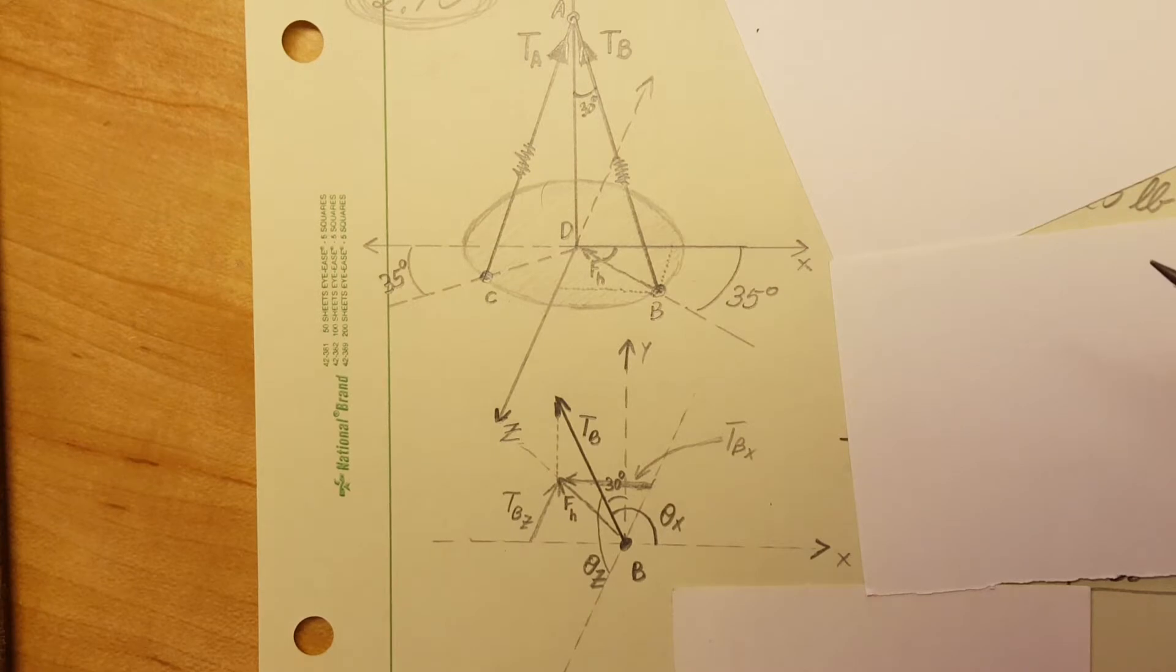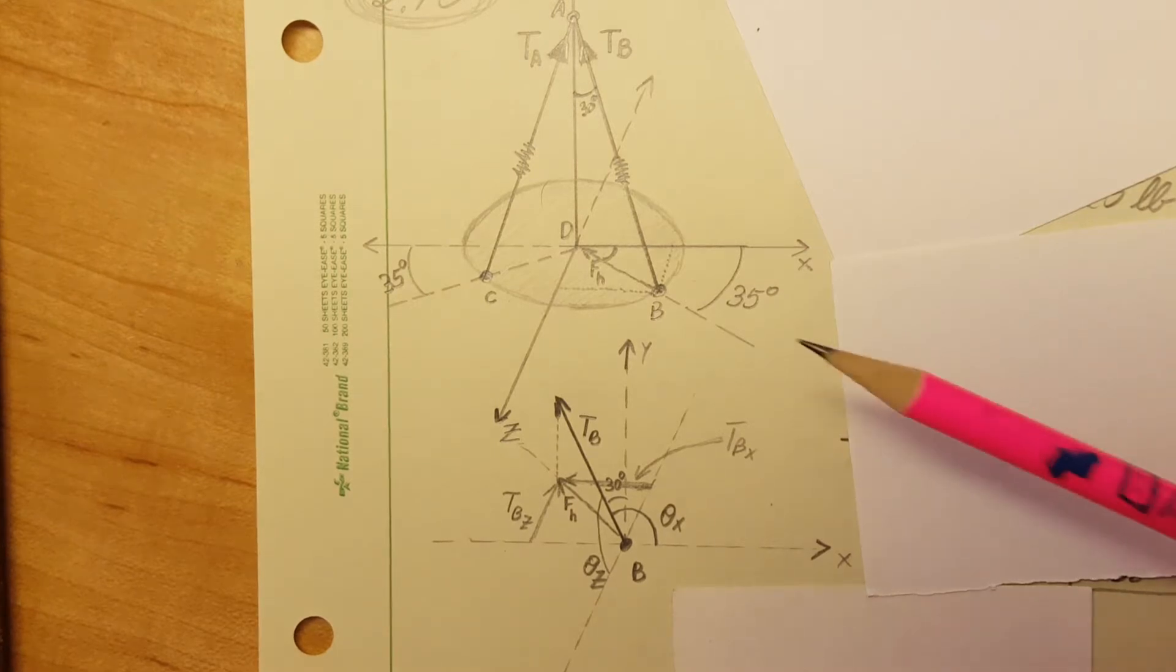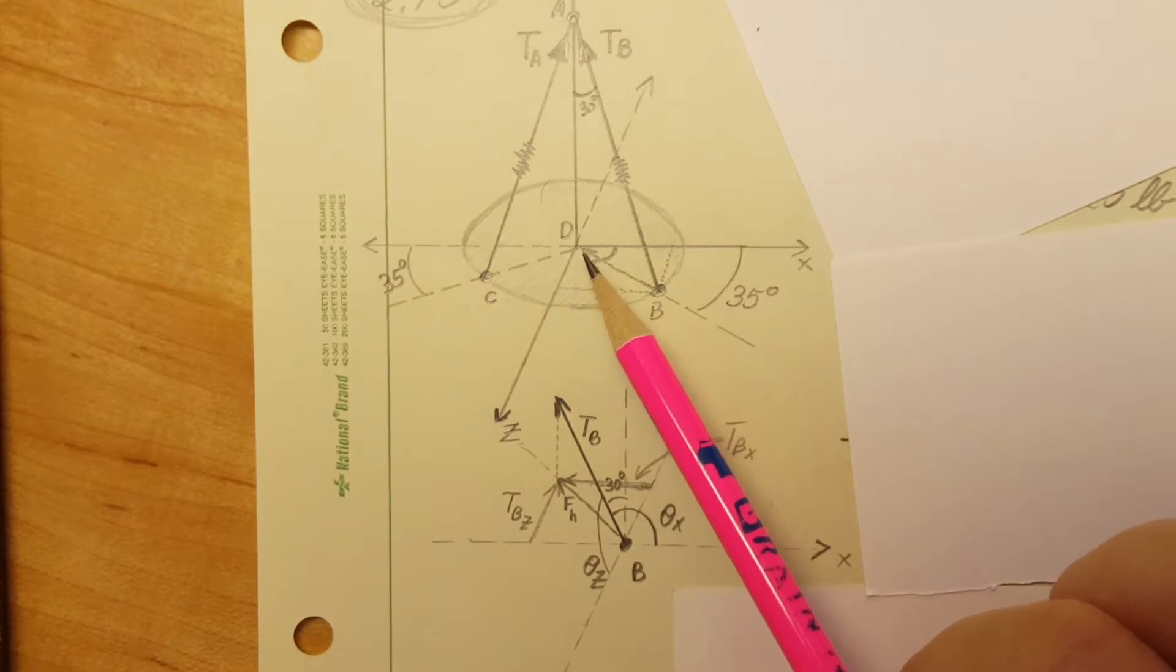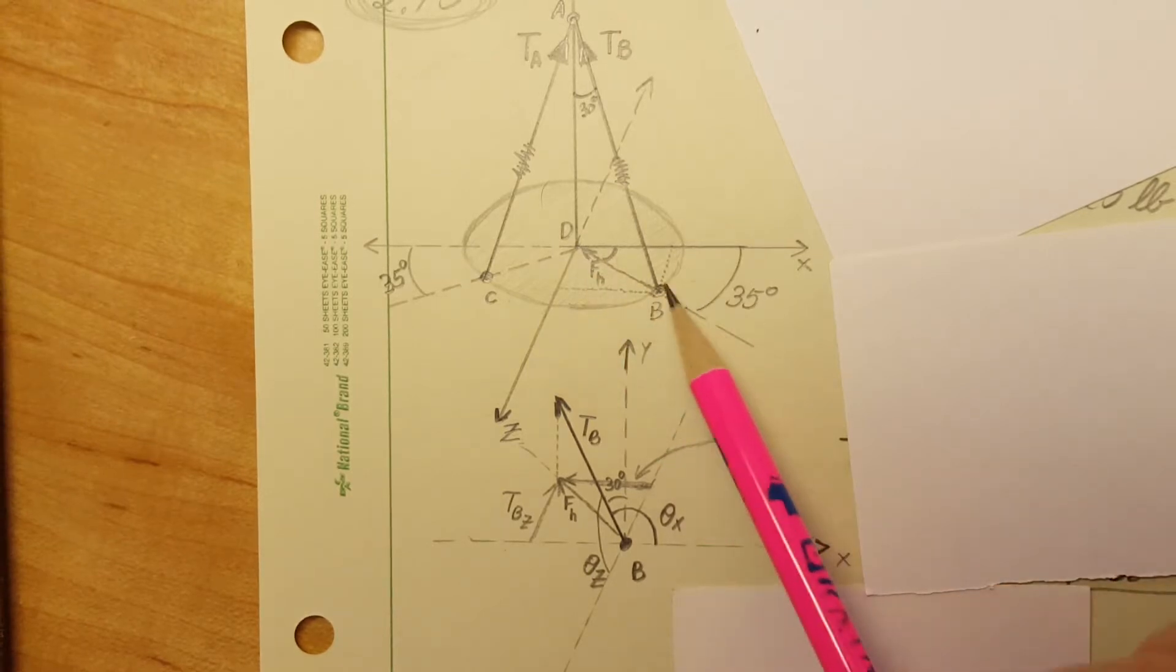The first thing we need to know about this problem, the tricky thing, is that in the book they gave us the axis with the origin right here at point D. Well that's no good for us because we are calculating from point B.